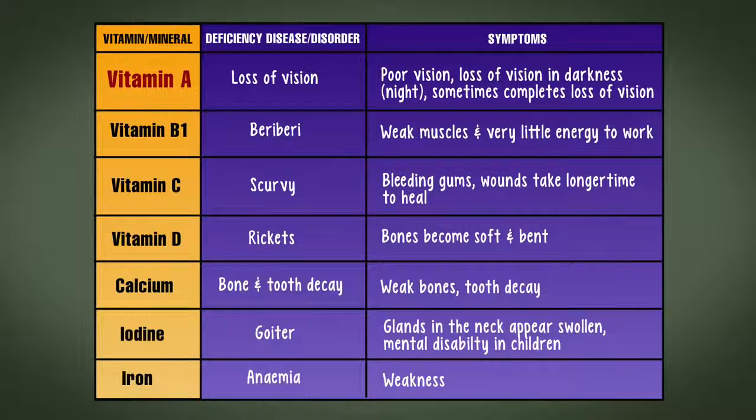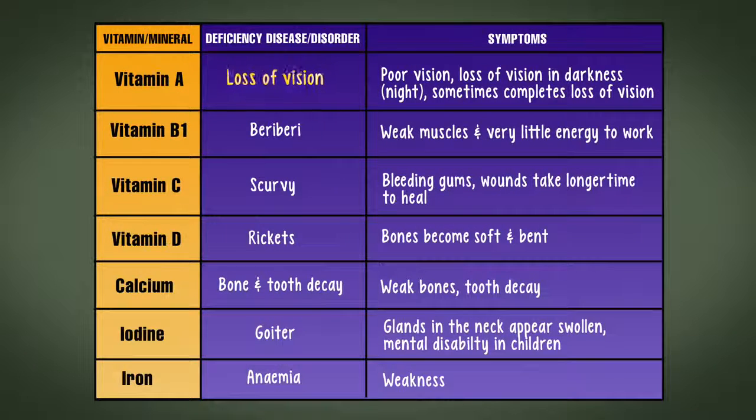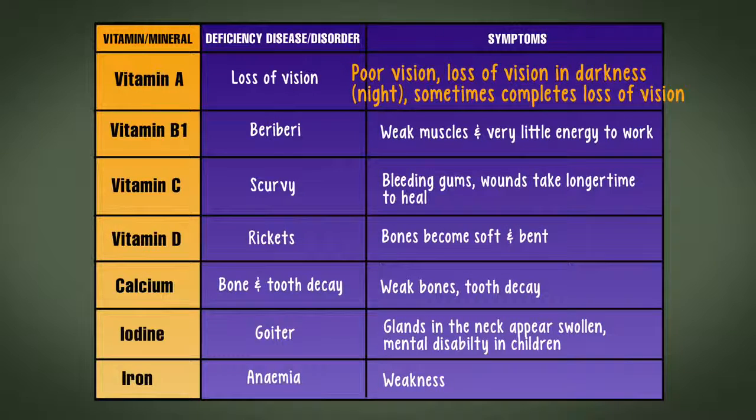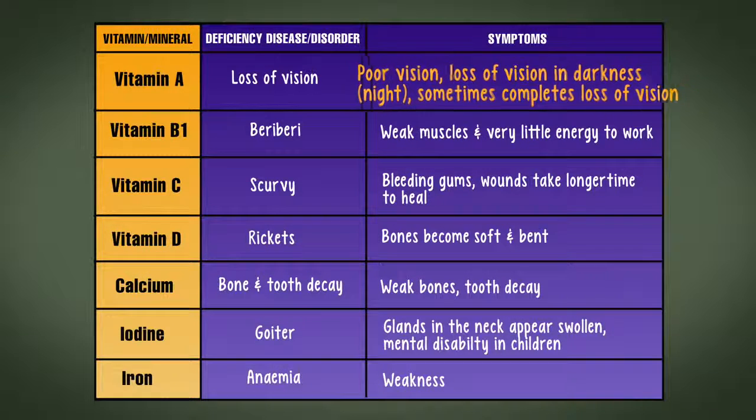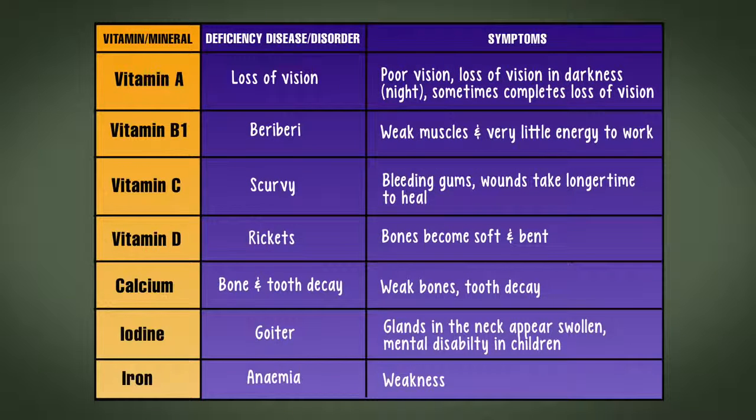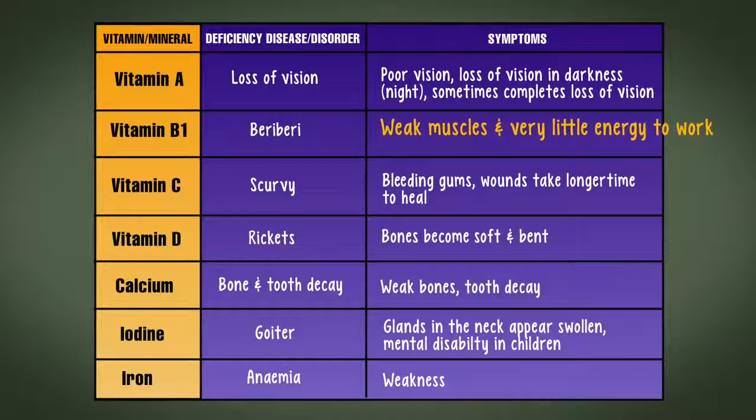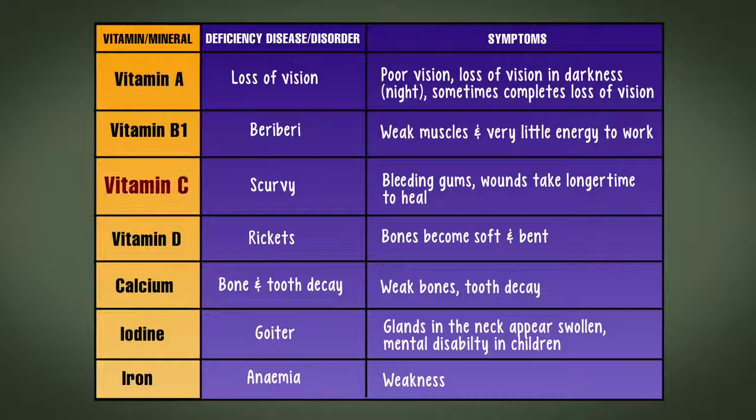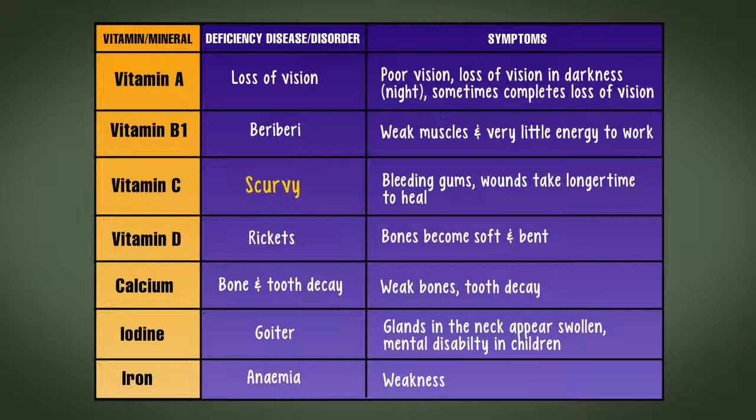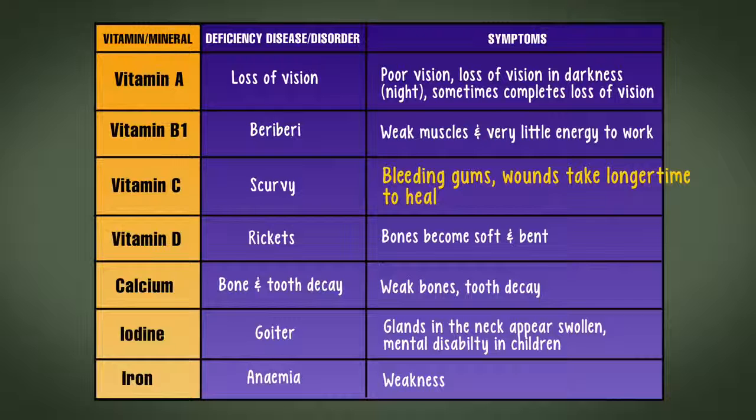Vitamin A: Loss of vision. Symptoms include poor vision, loss of vision in darkness, sometimes complete loss of vision. Vitamin B1: Beriberi - weak muscles and very little energy to work. Vitamin C: Scurvy - bleeding gums, wounds take longer time to heal.